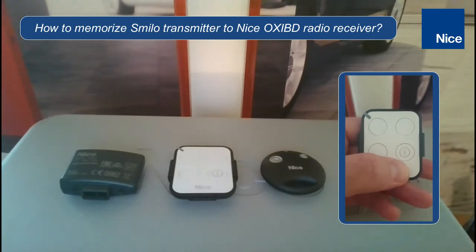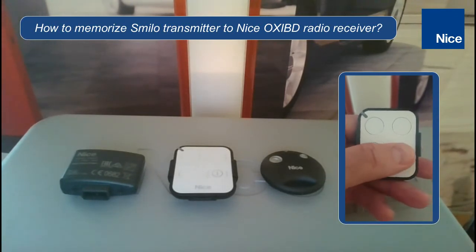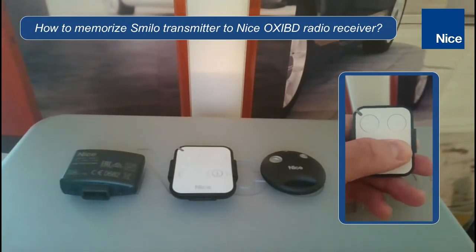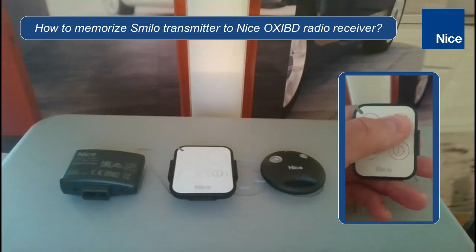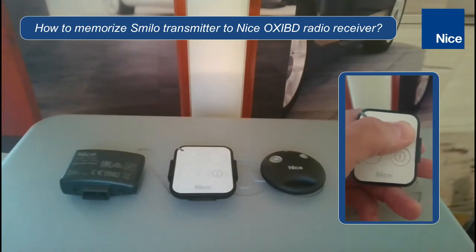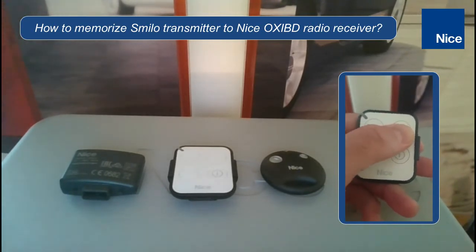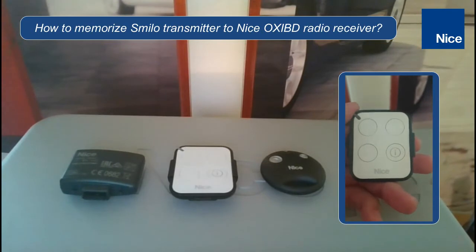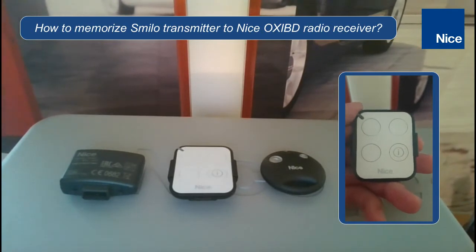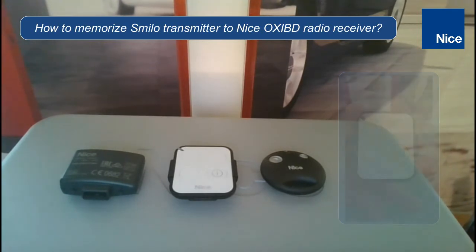In the previous episodes we were explaining that you are able to change the bidirectional transmitter into unidirectional mode and memorize it to the ON3E BD Oxy radio receiver. There is an easy procedure to change the mode of the chosen button.